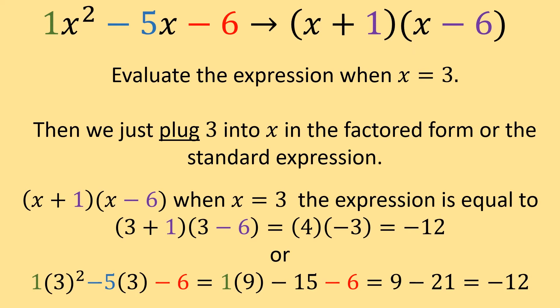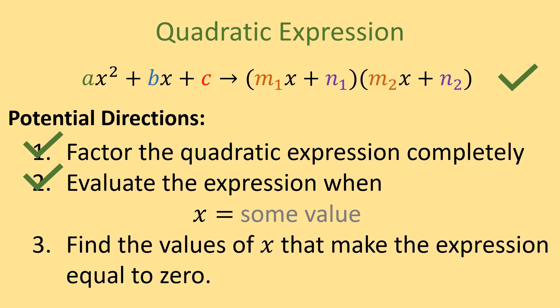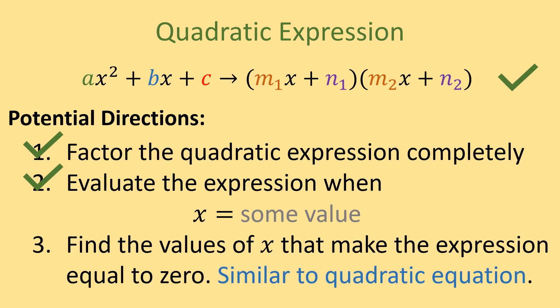When we put 3 into both the factored form and the standard form, we get negative 12 for the value. The only other potential direction you could get for a quadratic expression is to find the values of x that make the expression equal to 0 — and that is really going to behave exactly the same as a quadratic equation, which we'll talk about next.